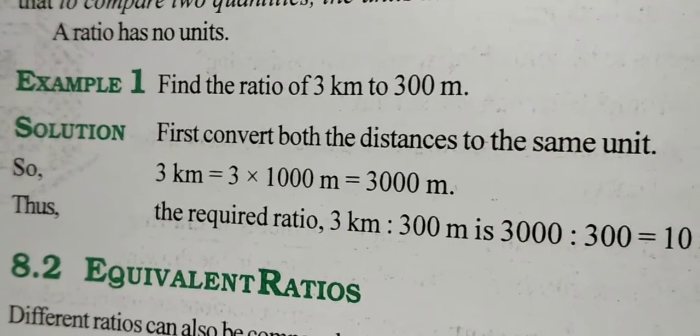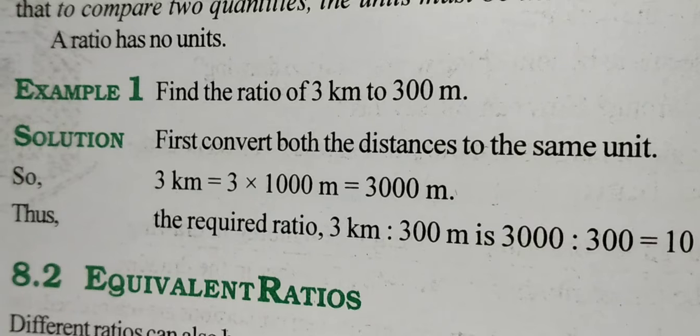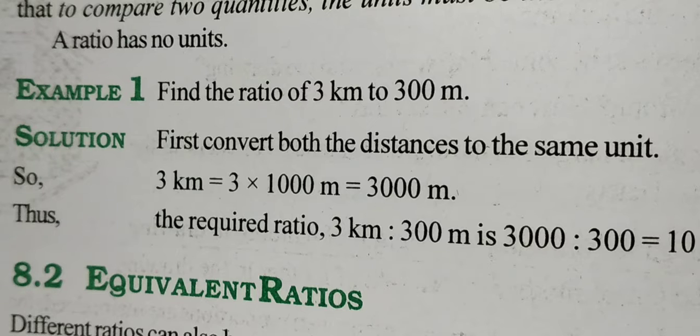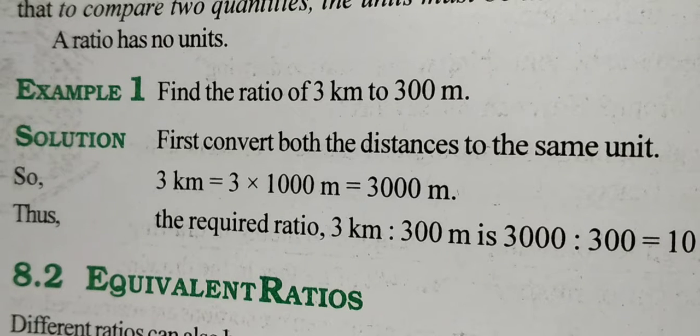Let's see example 1 of the textbook. We have to find out the ratio of 3 kilometer to 300 meter. We will make the units same. Either you convert meter into kilometer, or you convert kilometer into meter. I would advise you to always convert the bigger unit into the smaller one. So, converting kilometers into meters: 3 kilometer is equal to 3000 meter, because 1 kilometer equals 1000 meters.